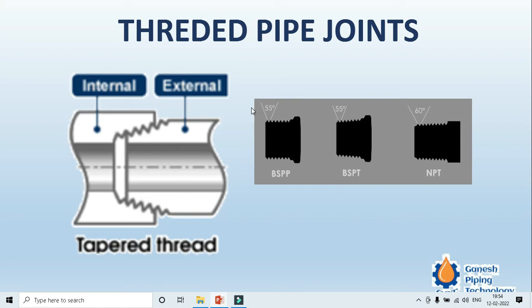BSPT (British Standard Pipe Tapered) threads have a 55-degree angle, while NPT threads have a 60-degree angle. BSPP stands for British Standard Parallel Pipe, and BSPT for British Standard Tapered Pipe — these are the two BSP categories. These cover the threaded connections.